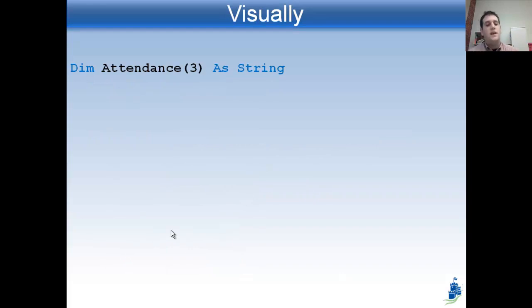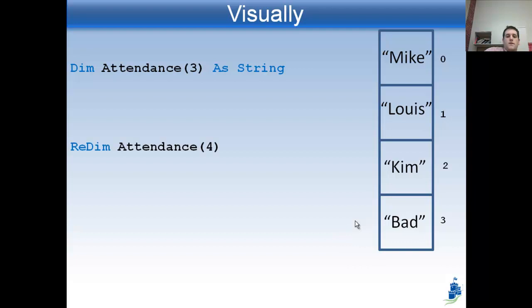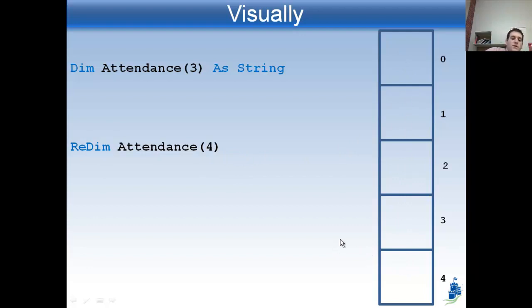Let's look at this visually. If I say Dim Attendance(3) As String, that gives me four boxes — zero through three — and somewhere in the code I can put information in them. Now if I want to ReDim it by saying ReDim Attendance(4), I get a whole new box and now the array goes from zero to four — five elements. But you'll also notice that the data inside zero to three disappeared. That's a problem. When we use ReDim, it destroys all the data inside your array and sort of makes a brand new one.